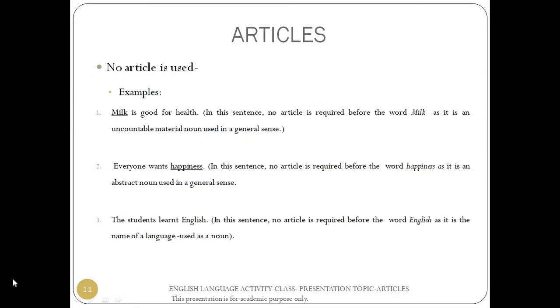No article is used — examples. 'Milk is good for health.' No article is required before the word milk as it is an uncountable material noun used in a general sense. 'Everyone wants happiness.' No article is required before the word happiness as it is an abstract noun used in a general sense. 'The students learnt English.' No article is required before the word English as it is the name of a language used as a noun.